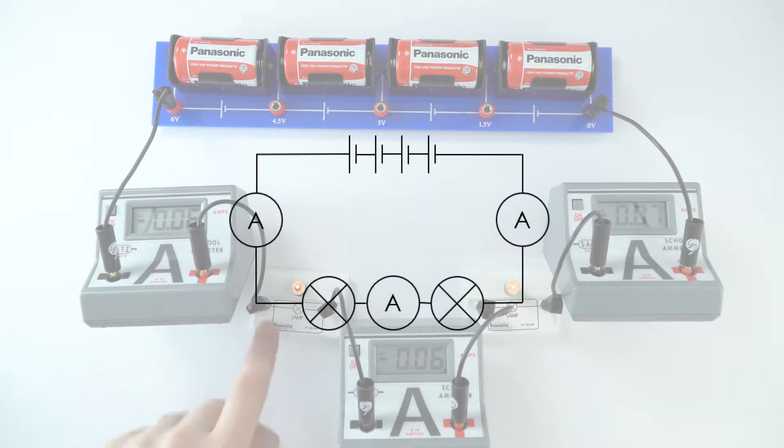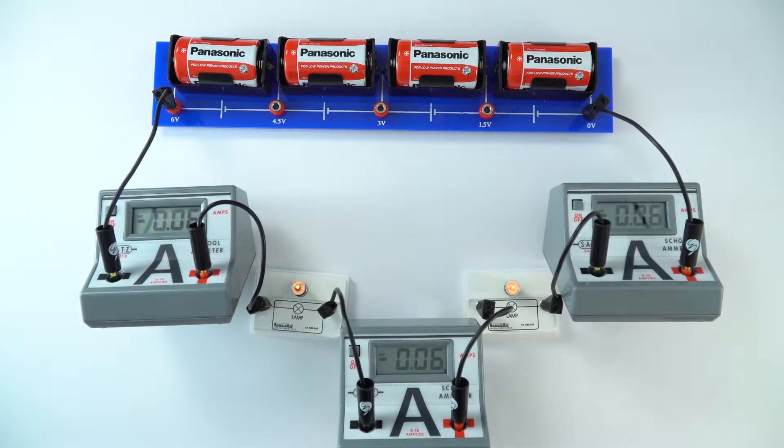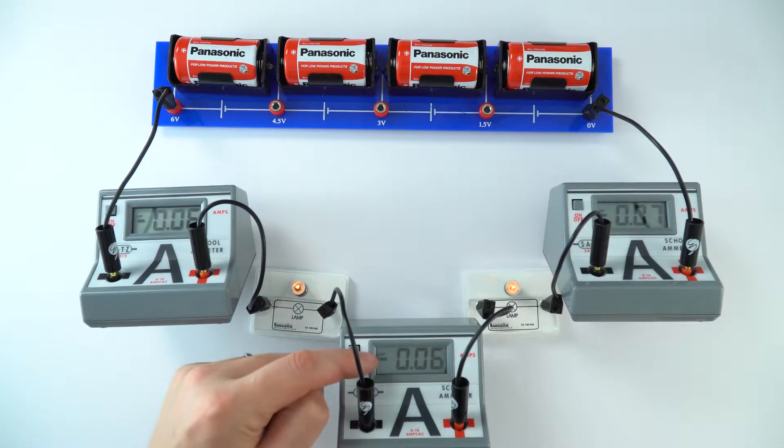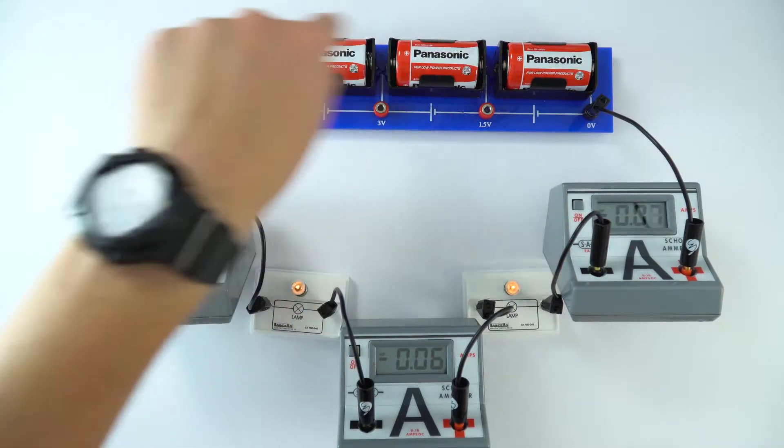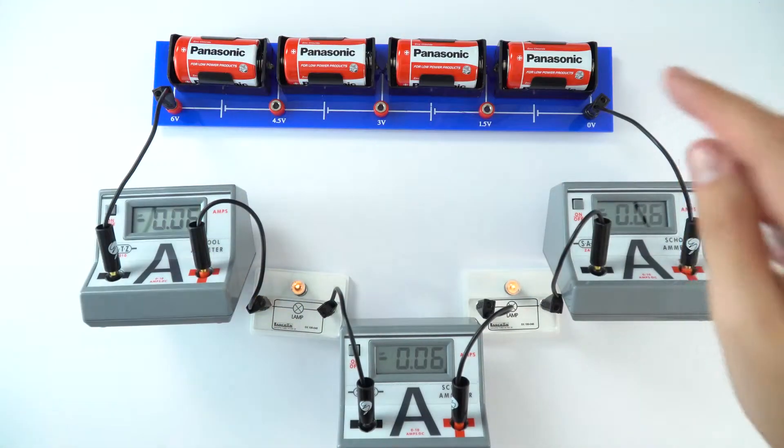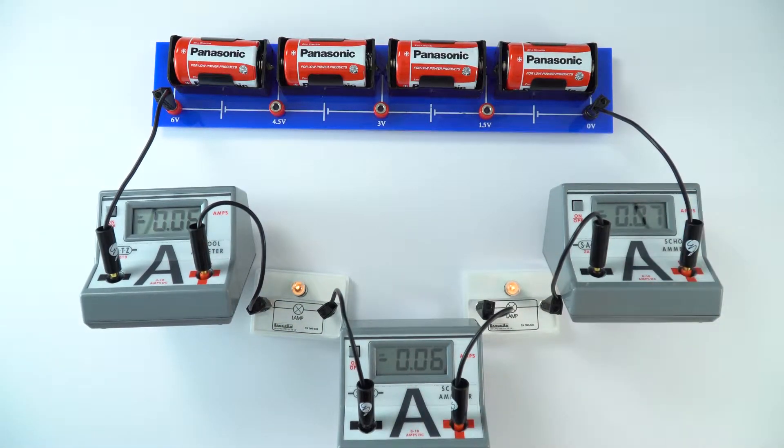So what we have here are now three ammeters. We've got one before the first cell, between the cells, and then one after that as well. Now the reason that it's got a negative symbol rather than positive is just due to the way that the battery is arranged. If we were to take the leads out and swap them round we'd get a positive value, but that doesn't really matter.